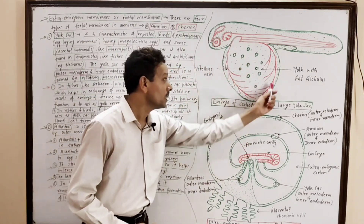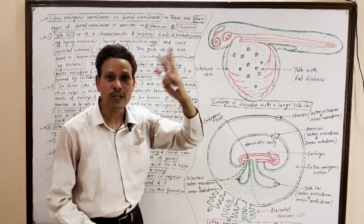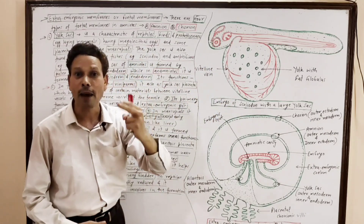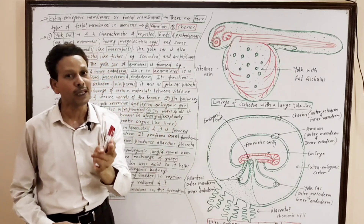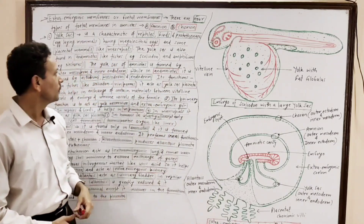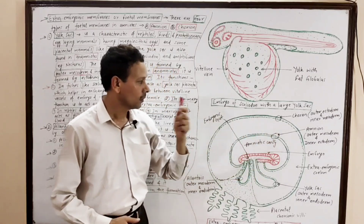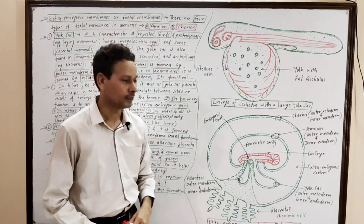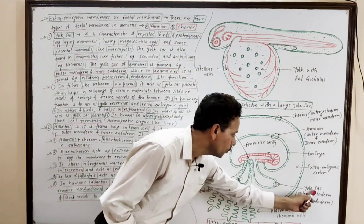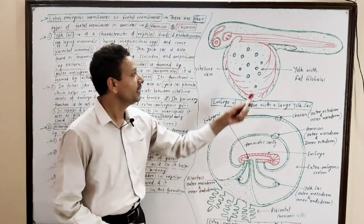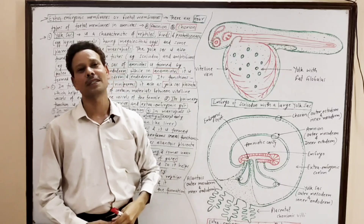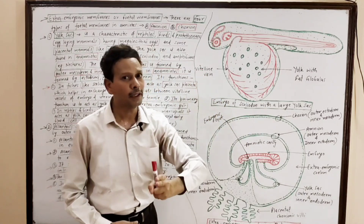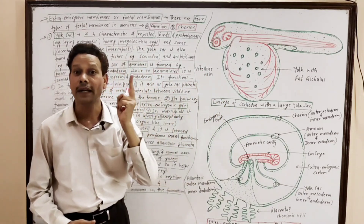Through this yolk sac, exchange of certain material takes place between vitelline vessels of the embryo and blood vessels of the uterus of the female. In case of amniotes, the yolk sac is formed by outer mesoderm and inner endoderm. But in case of anamniotes like fish and amphibians, this yolk sac is formed by ectoderm, mesoderm, and endoderm — all three germ layers are involved.